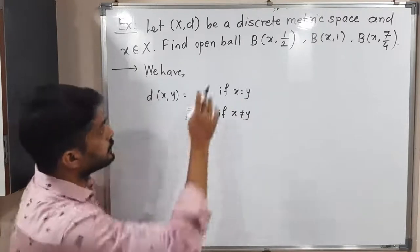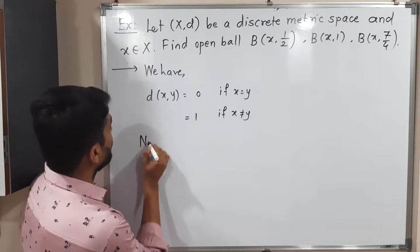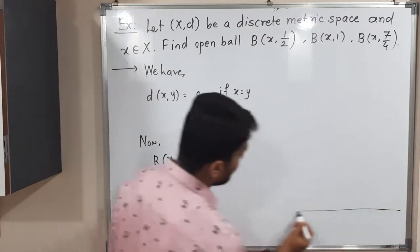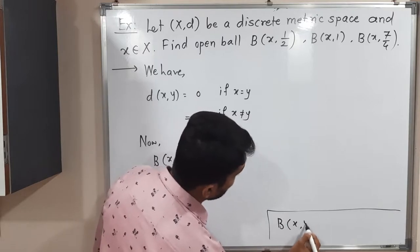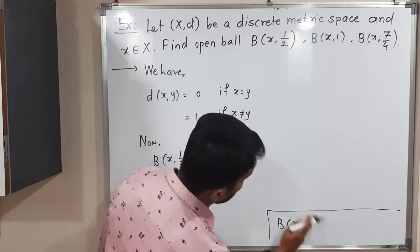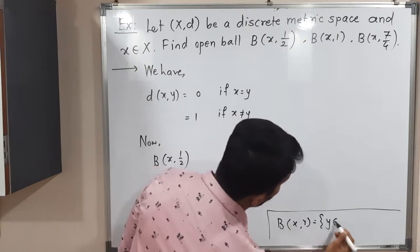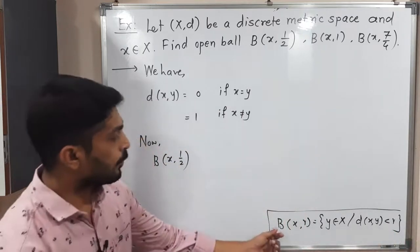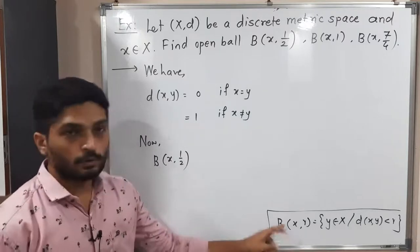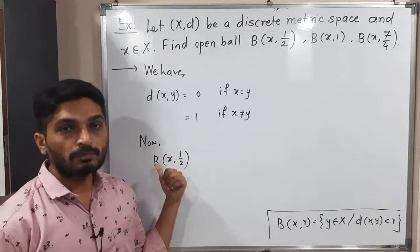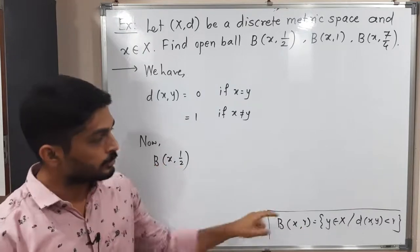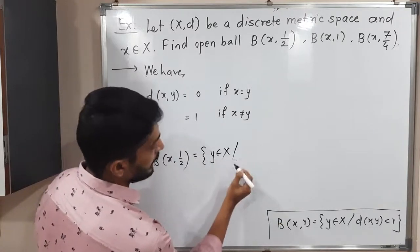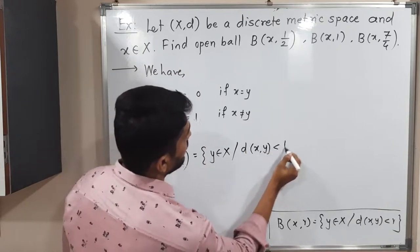Let us find the first one: B(x, 1/2). The definition of an open ball with center x and radius r is: the set of all y belonging to X such that d(x, y) is less than r. Comparing with our ball, center is x and radius r equals 1/2. So we have: y belonging to X such that d(x, y) is less than 1/2.